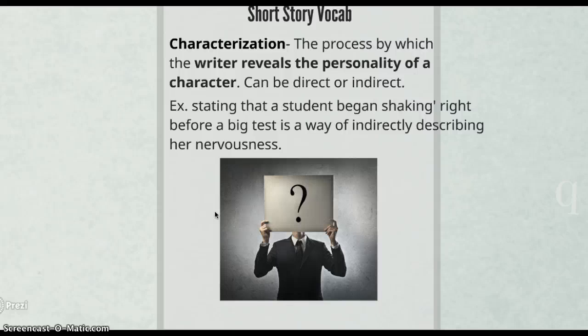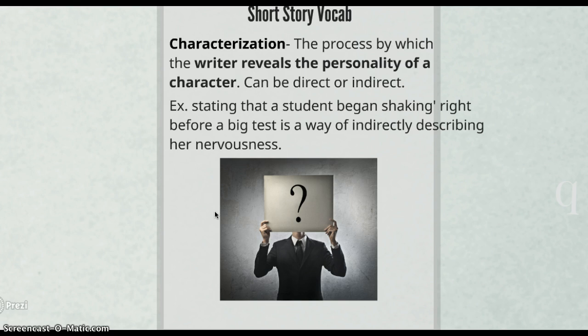First we have characterization, which is the process by which the writer reveals the personality of a character. It can be direct or indirect. With direct characterization, the writer makes direct statements about the character's personality. With indirect characterization, the author indirectly portrays the character's personality using things like dialogue, appearance, or actions. The example here is that a student began shaking right before a big test — that's a way of indirectly describing her nervousness, using her actions rather than stating she was nervous.